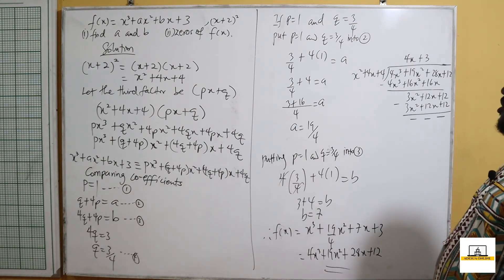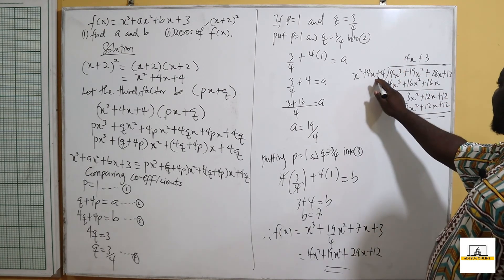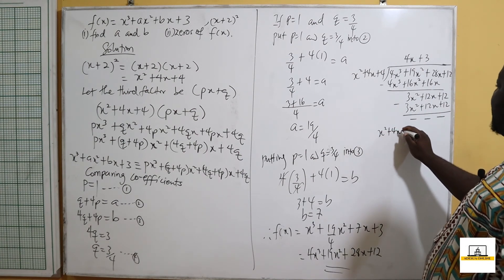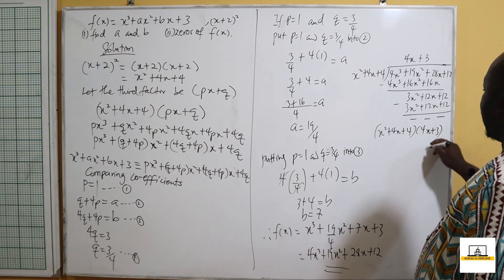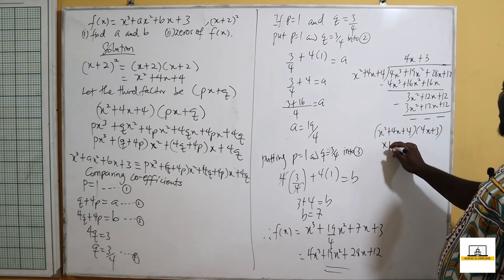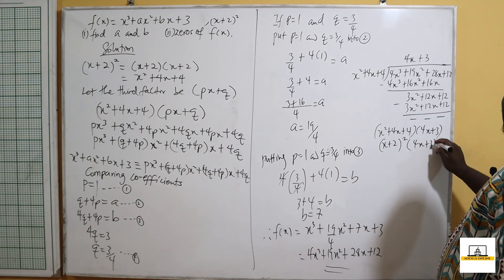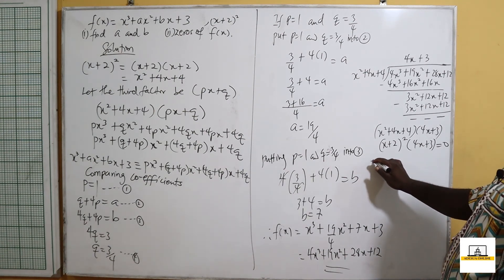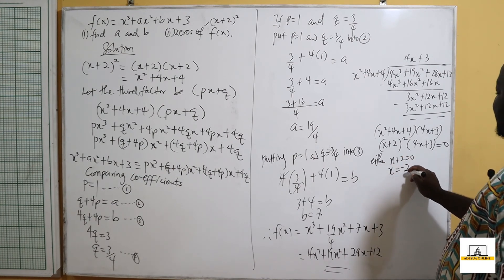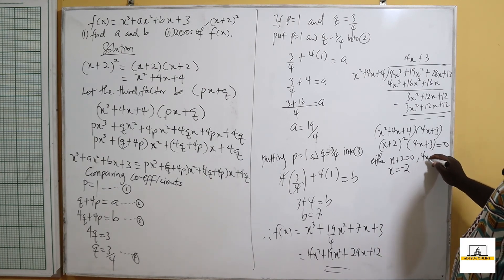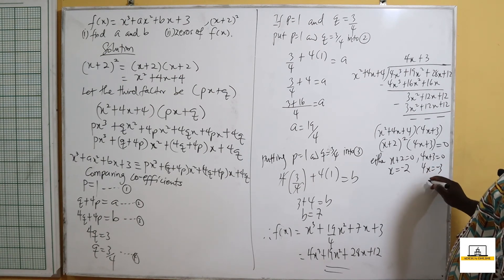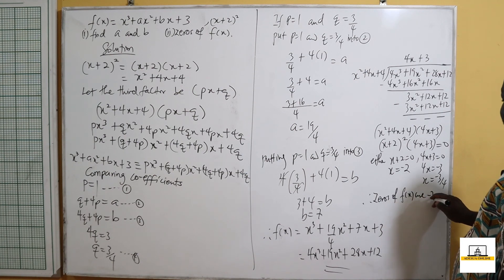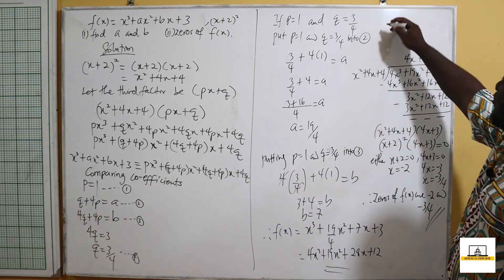So the factors of 4x cubed plus 19x squared plus 28x plus 12 are (x+2)² and (4x+3), which equals 0. Equating each factor to zero: from (x+2)² = 0 we get x = −2 (a repeated root), and from 4x + 3 = 0 we get 4x = −3, so x = −3 over 4. Therefore the zeros of f(x) are −2 and −3/4.